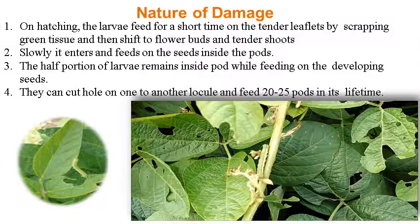Nature of damage for the pod borer (Helicoverpa armigera): after hatching, the larva starts feeding on tender leaves by scraping the green tissue. It then slowly enters and feeds inside the developing seeds. Half portion of the larger larva is inside while feeding on the developing seeds. They can move to another locule, feeding on 20 to 25 pods in its lifetime.